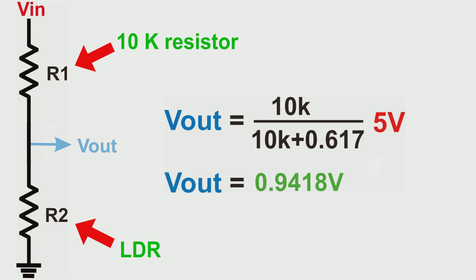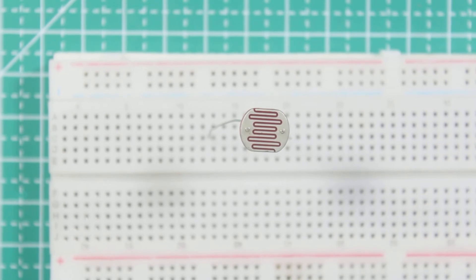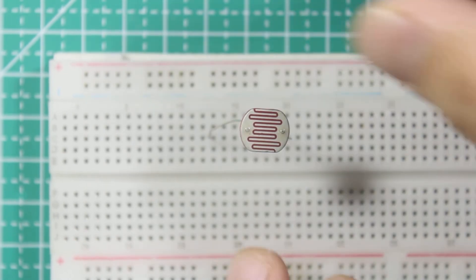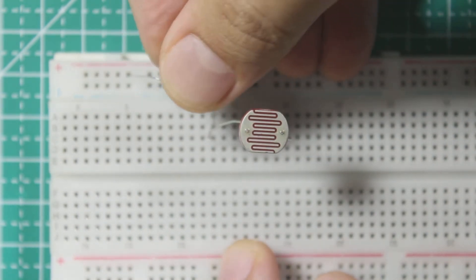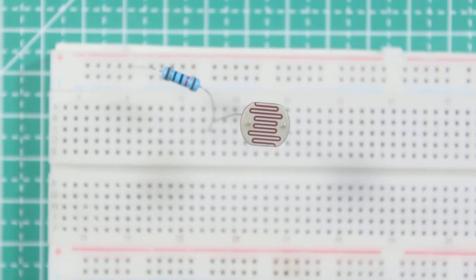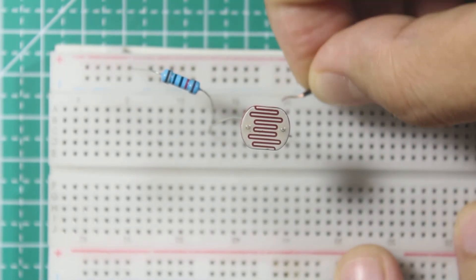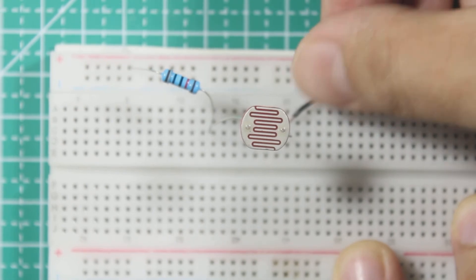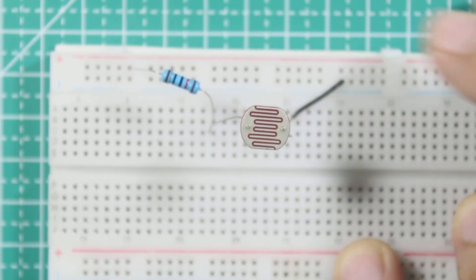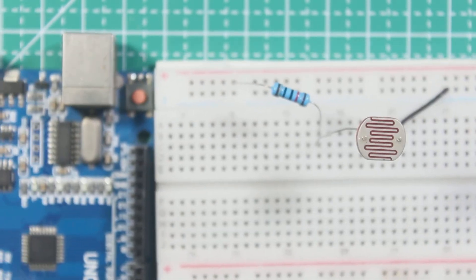Let's get our hands dirty by trying this in a real circuit. I will make the circuit like this schematic: I connect the 10k resistor to the LDR, connect the other end of the resistor to 5 volts, and the other end of the LDR to ground. I take the output to analog pin 0 of Arduino at the junction between the LDR and the 10k resistor.